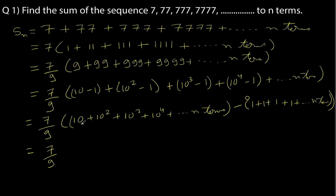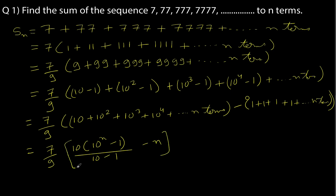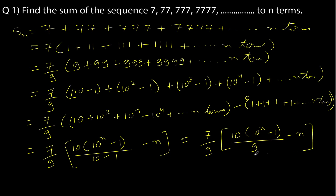Now we can just use the formula for the sum of n terms of a GP. The formula is a times (r to the power n minus 1) divided by (r minus 1). Here r is 10, so we get 10 times (10 to the power n minus 1) divided by (10 minus 1). Therefore the sum S_n equals 7 by 9 times 10 times (10 to the power n minus 1) divided by 9, minus n.